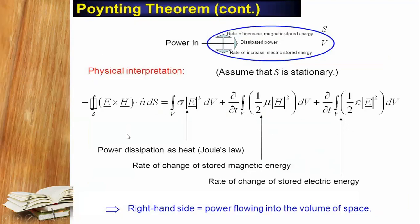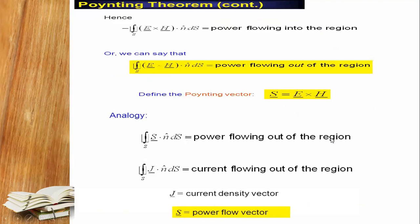The changes we can see: the first part is related to current density — that is the power dissipated as heat, measured in joules. The middle part, related to the magnetic field, gives the rate of change of stored magnetic energy. The last part is the rate of change of stored electric energy. All of these are energy terms. The right-hand side equals the power flowing into the volume of space. So the entire expression is the power flowing into the volume of the space.